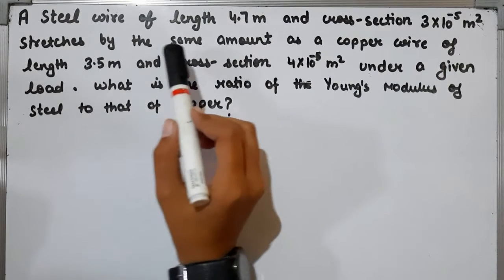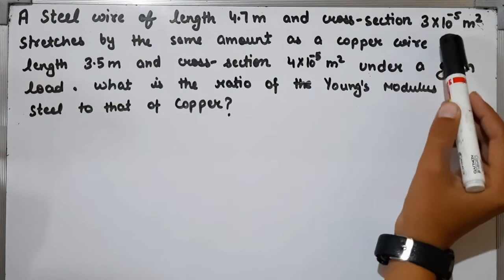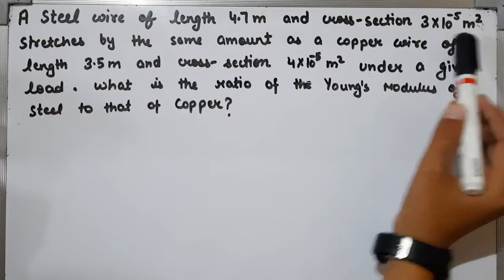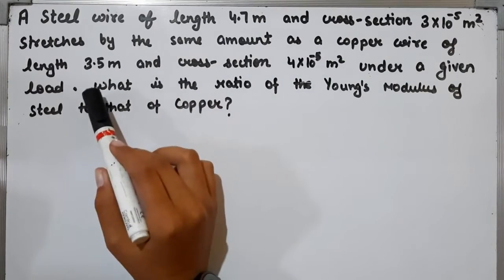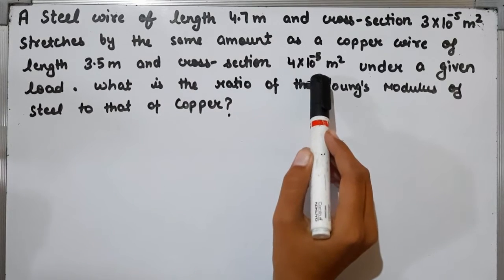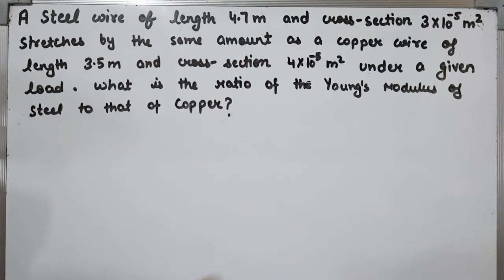A steel wire of length 4.7m and cross-section 3×10^-5 m² stretches by the same amount as a copper wire of length 3.5m and cross-section 4×10^-5 m² under a given load. What is the ratio of the Young's modulus of steel to that of copper?